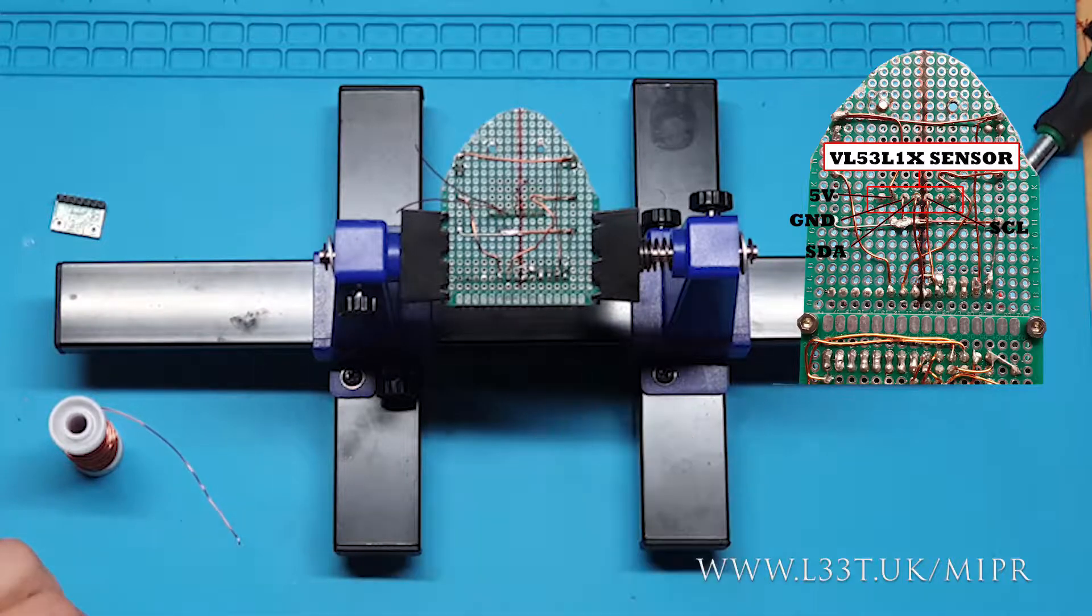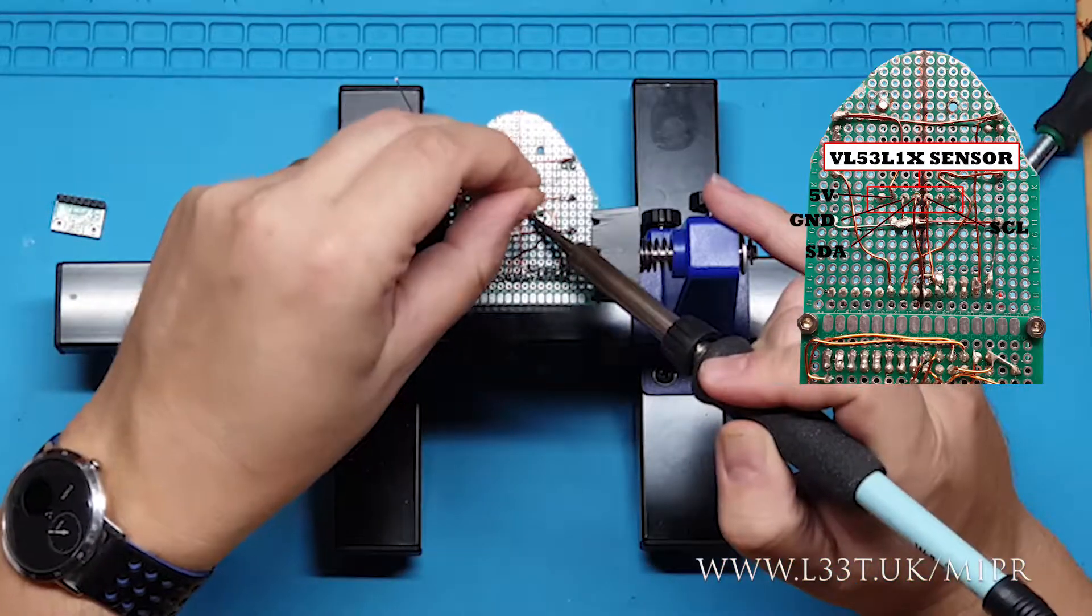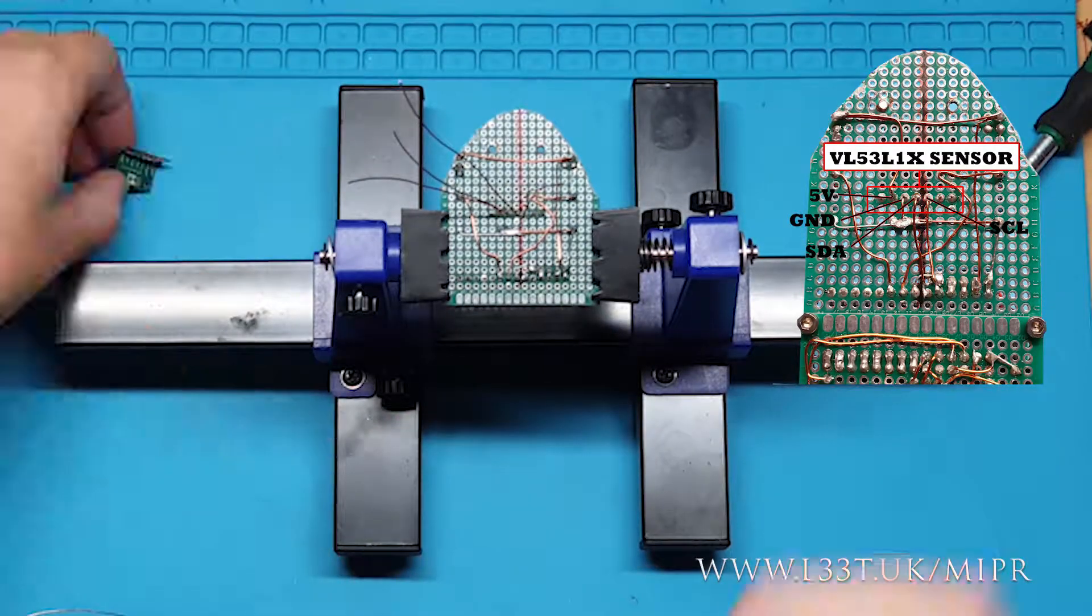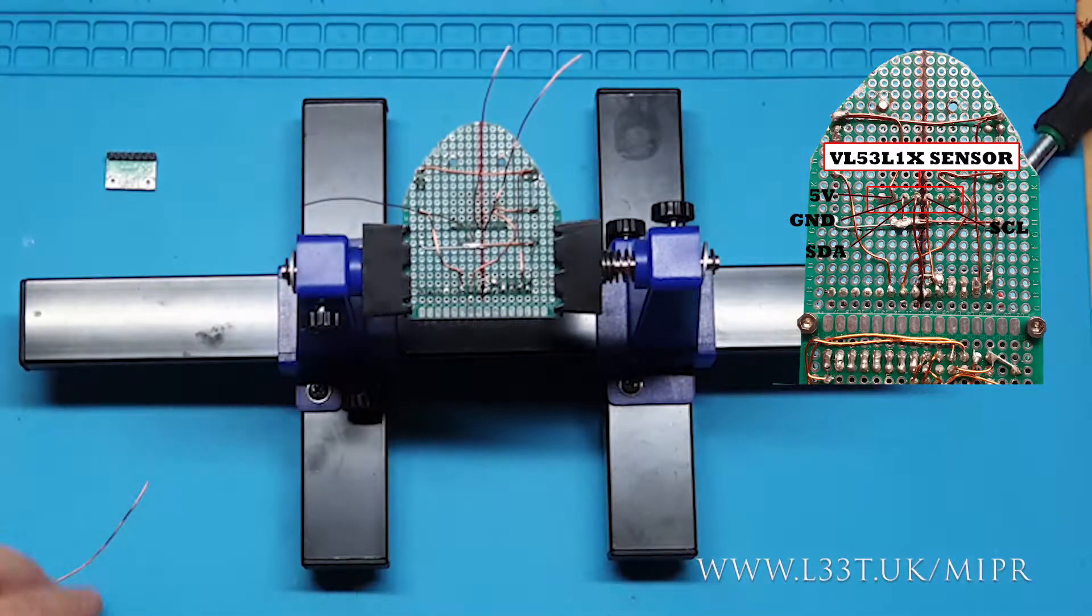Download the code from leet.uk, ensuring that you're using version 0.4, to check that the time of flight sensor is working.